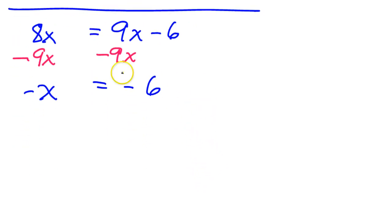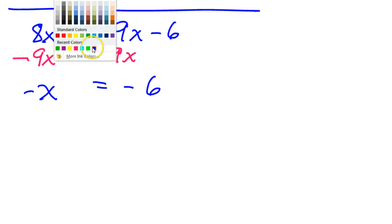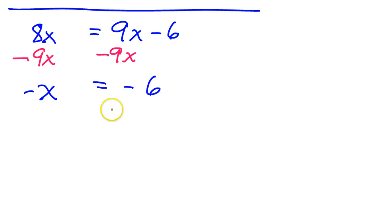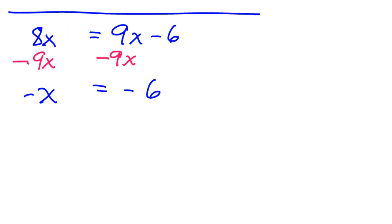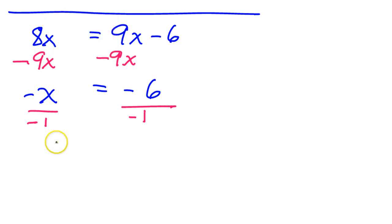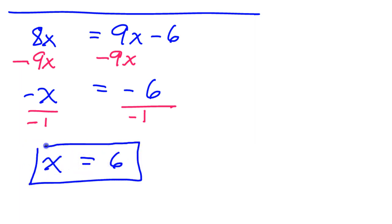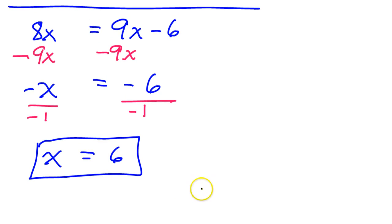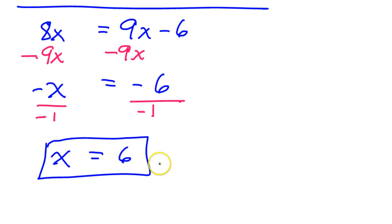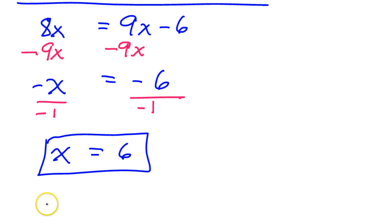Negative x equals negative 6. Divide both sides by negative 1: x equals 6. And that's it for number 7.